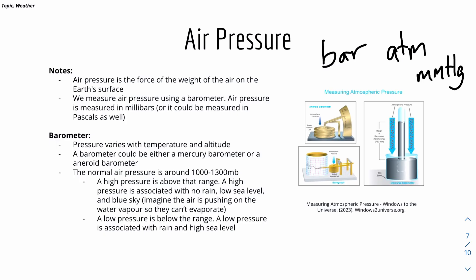Here's how we can interpret air pressure. The normal air pressure is around 1000 to 1300 millibars. But if the pressure is higher than the range, basically a high pressure is associated with no rain and low sea level and blue sky, which means that there will be no rain.